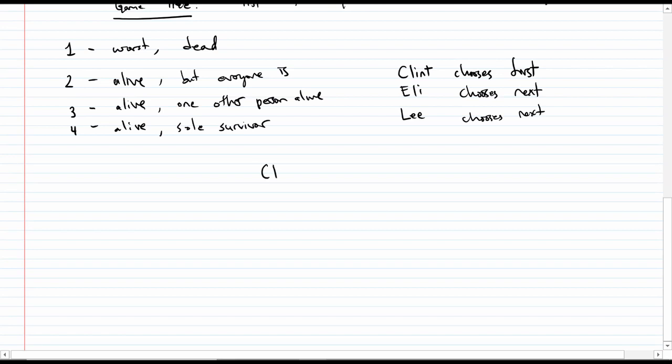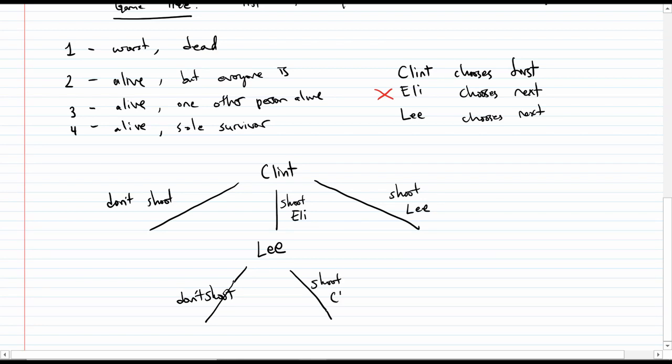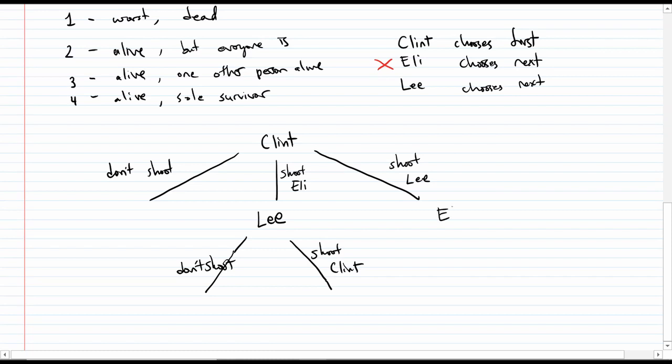Let's make some assumptions. We'll assume that Clint is going to choose first. And if they're still alive to choose, then Eli will choose, and then Lee. It'll cycle through the three of them until the game is over. So the first thing we do to make a game tree is we write out what Clint's three options are. Clint could choose not to shoot, or Clint could choose to shoot at Eli, or he could choose to shoot at Lee. And what would happen in each case? Well, let's see. Eli shoots next, but if Clint shoots Eli, then Eli's dead, so it looks like Lee will go next.